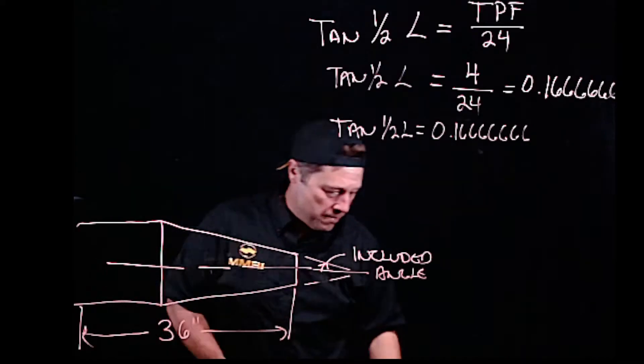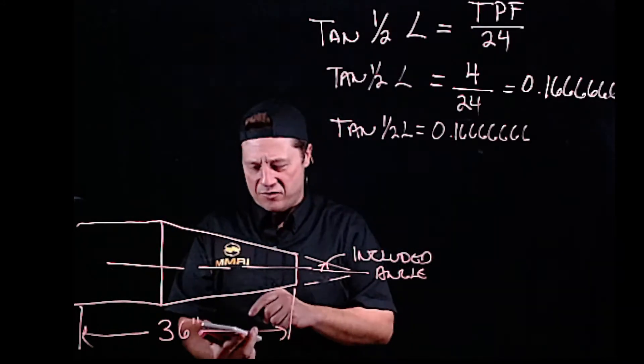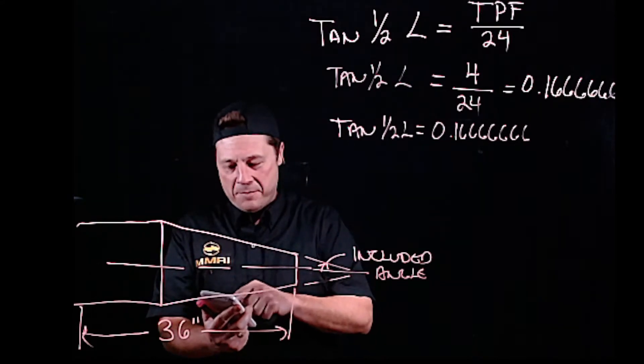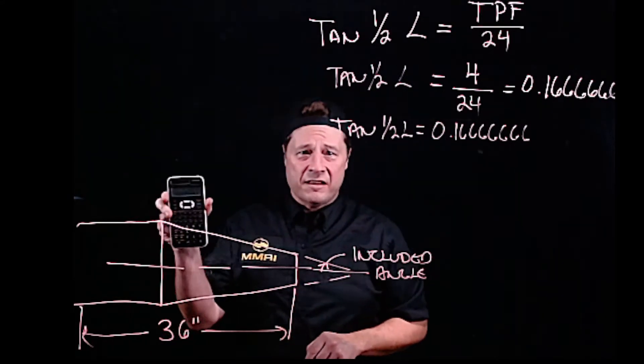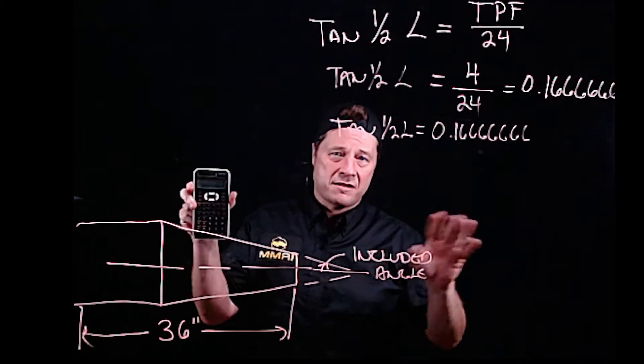What I'd like you to do—you have a calculator, because I know you do, because I asked you to get one. 4 divided by 24 on your calculator will now say 0.1666666, et cetera.